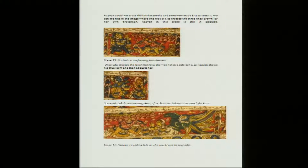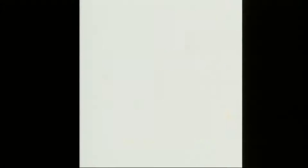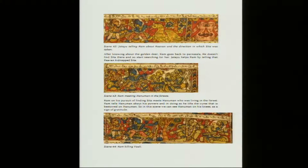Ravan wounds Jatayu, who was trying to save Sita as Ravan was abducting her and going away. Jatayu tells Ram about Ravan and the direction in which Sita was taken. After knowing about the golden deer, Ram goes back to the Parnashala, does not find Sita, and starts searching for her. Jatayu helps Ram by telling him that Ravan has kidnapped Sita — he was the eyewitness. He was injured and then died — he was an old bird who was a friend of King Dasharatha, Ram's father.